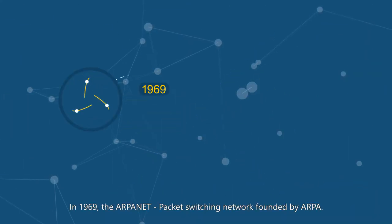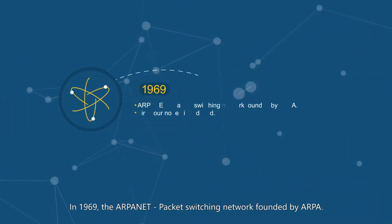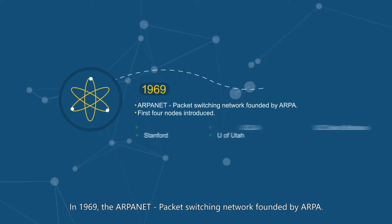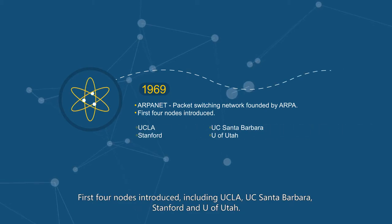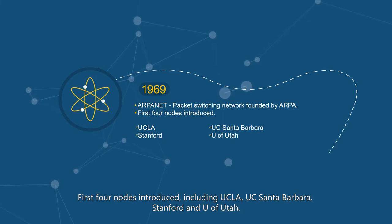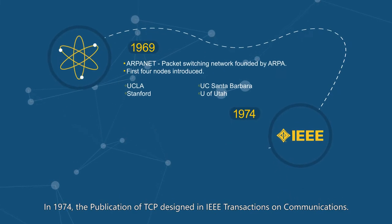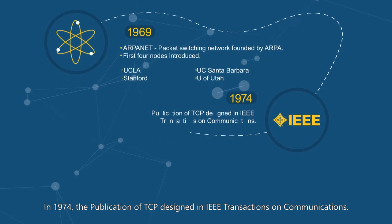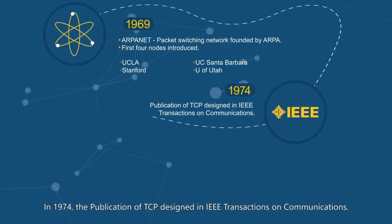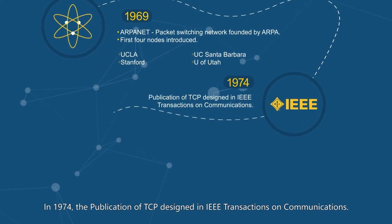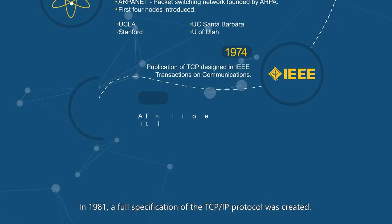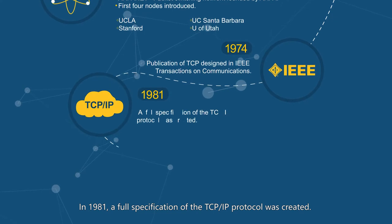In 1969, the ARPANET packet switching network, founded by ARPA, introduced its first four nodes including UCLA, UC Santa Barbara, Stanford, and the University of Utah. In 1974, the publication of TCP was designed in IEEE Transactions on Communications.